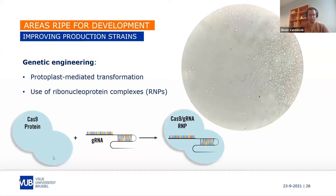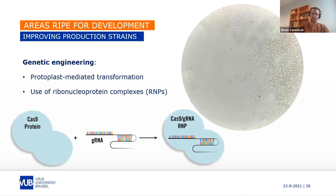In the picture you can see the hyphae that get digested and then form these spherical cells, which are afterwards used to genetically modify the organism.